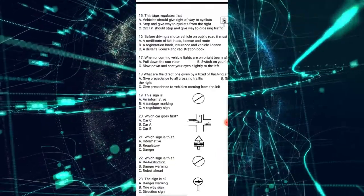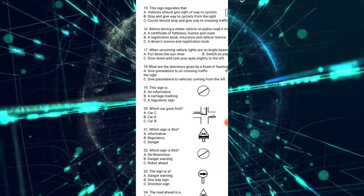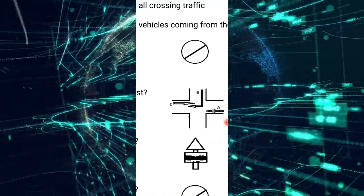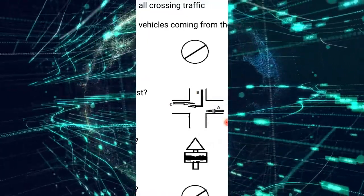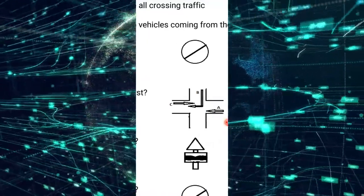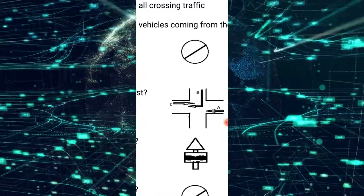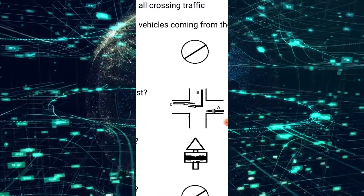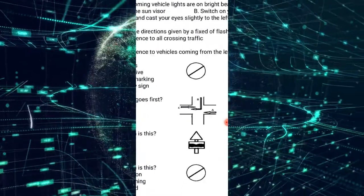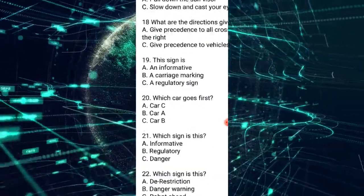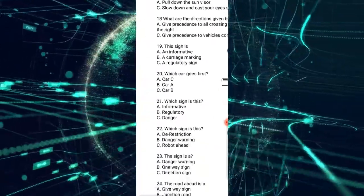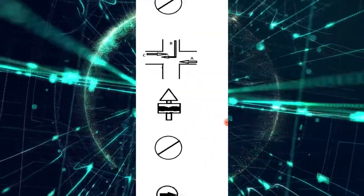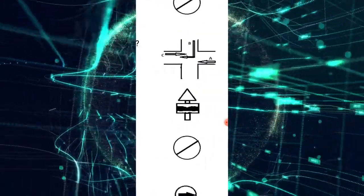Number 20: which car goes first? Car A gives right of way to car B, and car B gives right of way to car C. So car C is the one that will go first. The correct answer for number 20 is A — car C goes first.